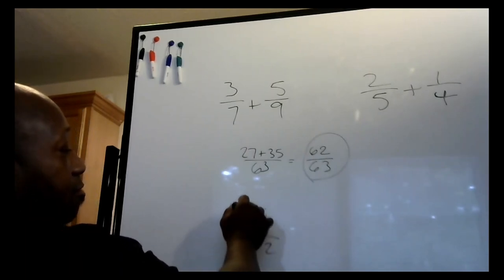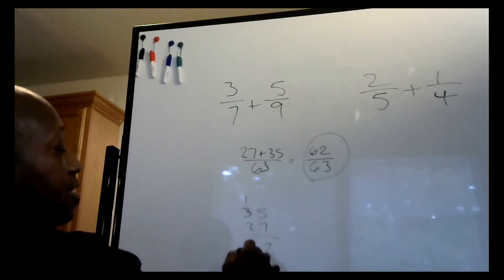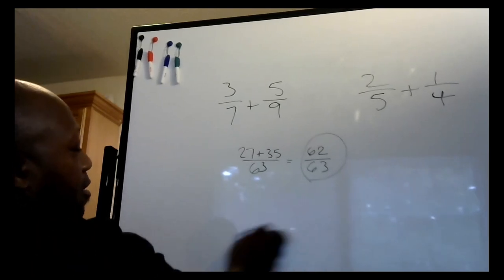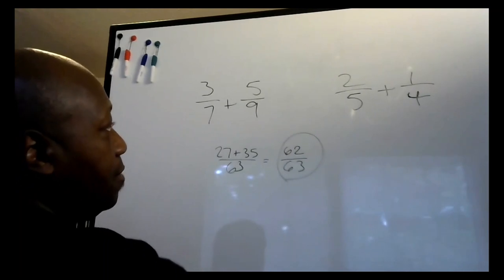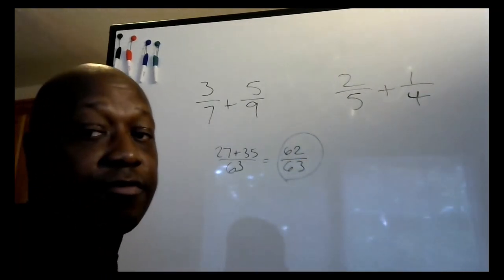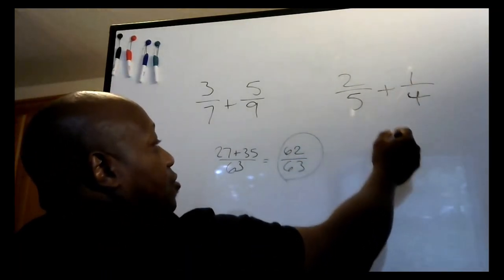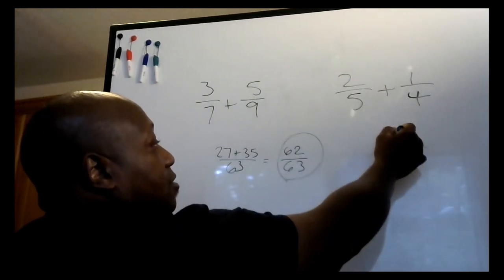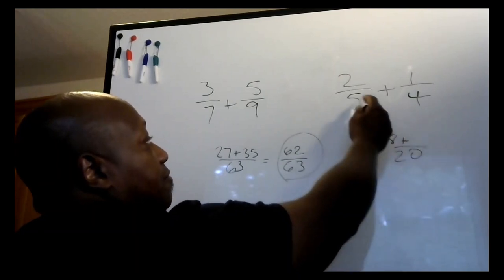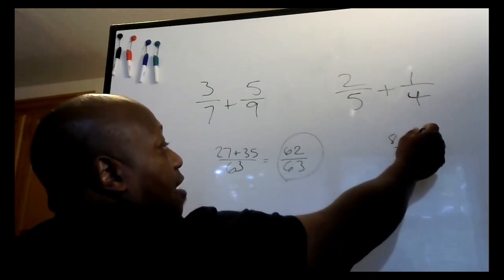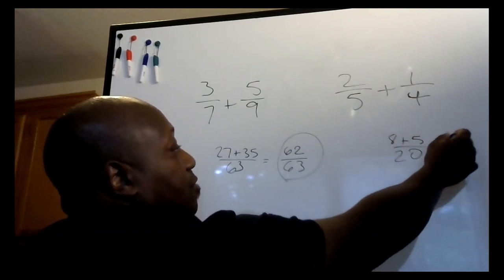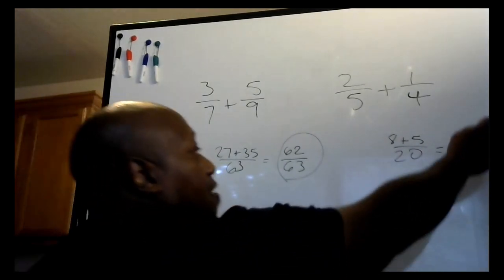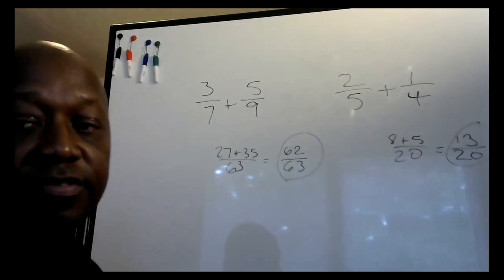The next one: two-fifths plus one-fourth. Five times four is twenty. Cross multiply: four times two is eight, plus five times one is five. That equals 13 over 20. That is our final answer.